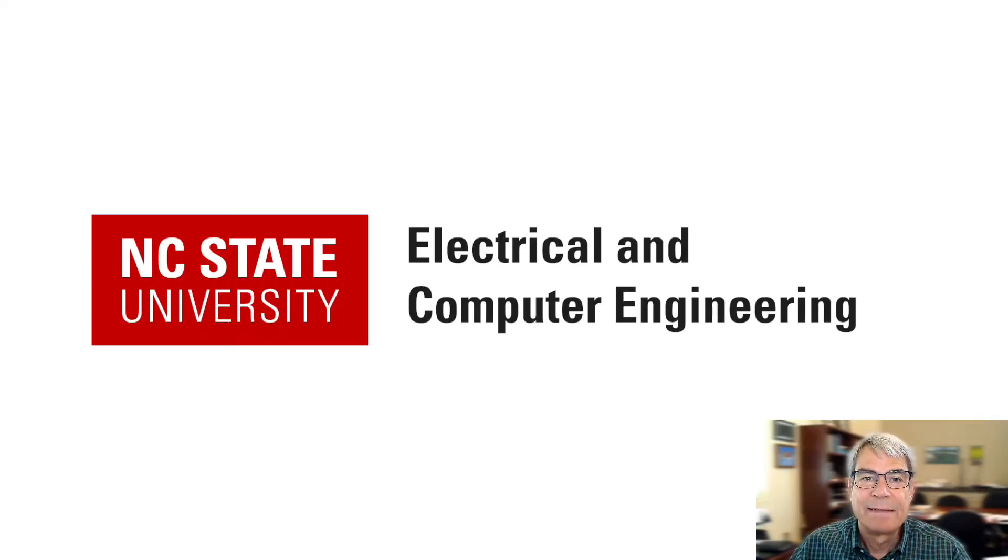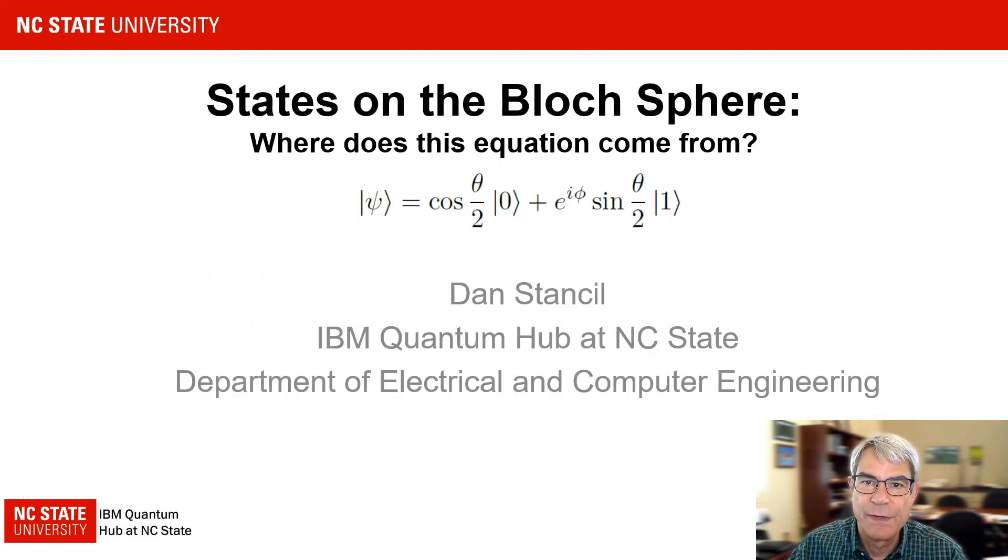Hi, I'm Dan Stansel and in this video I would like to talk about states on the Bloch sphere. Or more specifically, where does this equation come from? It shows up in almost all introductions to quantum computing, but usually with very little explanation about where it comes from other than identifying theta and phi as angles on the Bloch sphere.